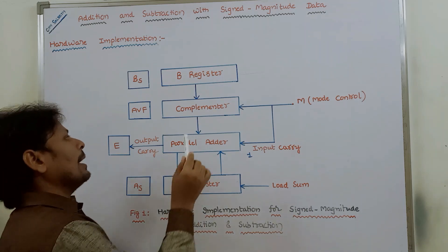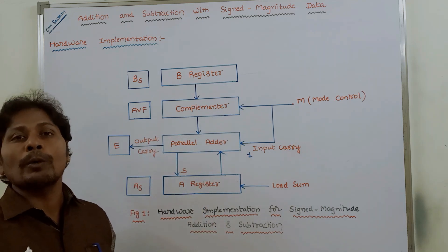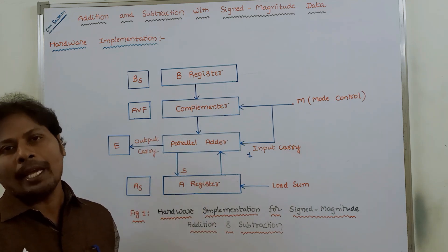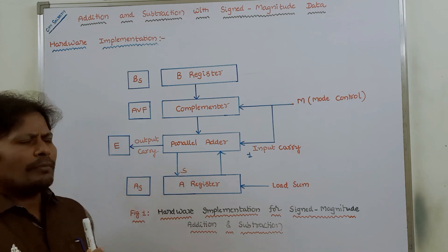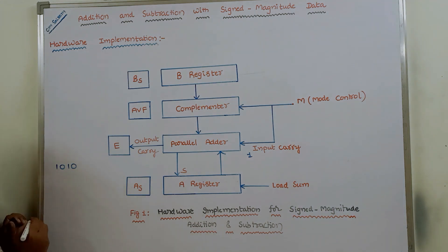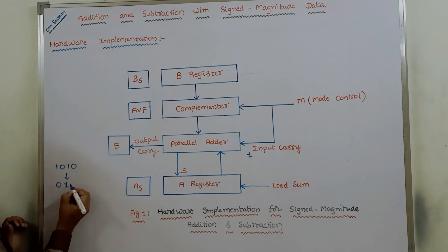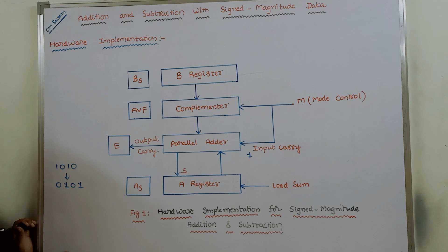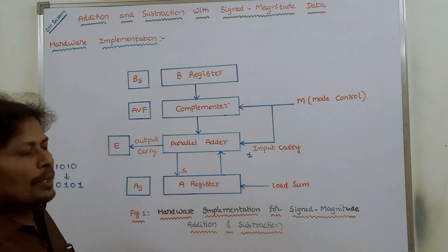The complementer is used for finding out the complement of a given number. For example, if we take 1010, its complement is: 1 is changed to 0, 0 is changed to 1, 1 is changed to 0, and 0 is changed to 1. So this is the purpose of the complementer.